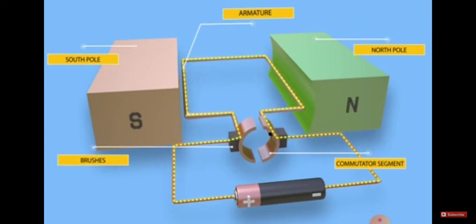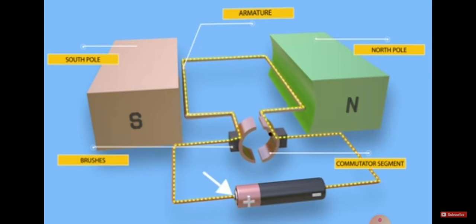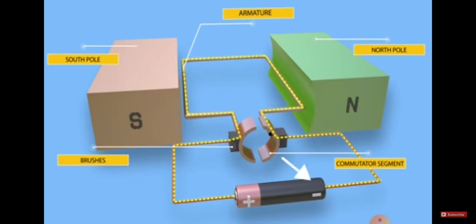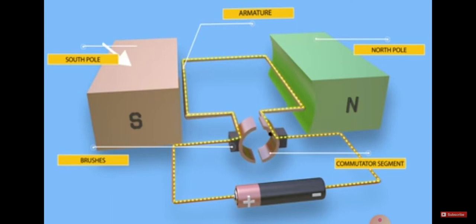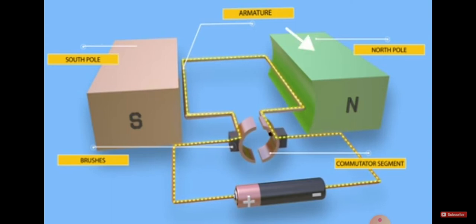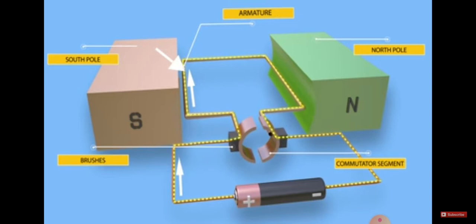Current passes through a battery — positive and negative charges are present. The positive charges travel through the conductors on all sides, and the conductors are filled with the force of magnetic attraction.